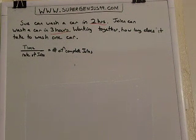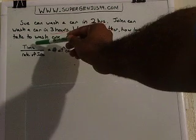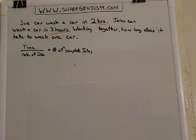Anytime you have these type of equations, usually you're going to either be figuring out time or rate. Time over the rate of the number of jobs that it takes will equal the number of complete jobs that I can do.